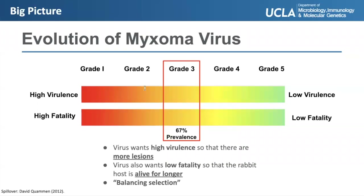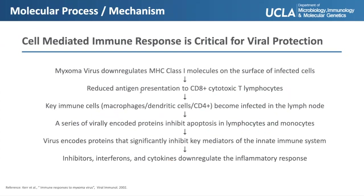Grade 3 had the perfect balance of high enough virulence and low enough fatality, which is why this is a classic example of balancing selection — multiple alleles must be maintained considering the end result. A cell-mediated immune response is critical for viral protection because without it, the virus is able to initiate a cascade: the virus first downregulates MHC class 1 molecules on the surface of infected cells, reducing antigen presentation to CD8+ T cells. As a result, immune cells like macrophages, dendritic cells, and CD4+ T cells become infected in the rabbit's lymph nodes. Virally encoded proteins then inhibit apoptosis in lymphocytes and monocytes, enabling the virus to encode proteins that significantly inhibit key mediators in the innate immune response. Ultimately, inhibitors, interferons, and cytokines downregulate inflammation, and the immune response is unable to dissipate the virus within the host.